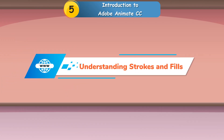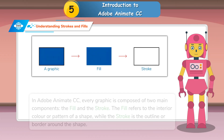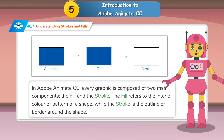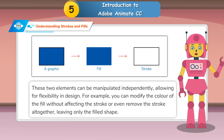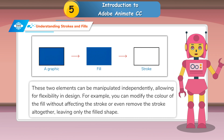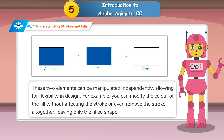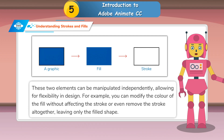Understanding Strokes and Fills. In Adobe Animate CC, every graphic is composed of two main components: the fill and the stroke. The fill refers to the interior color or pattern of a shape, while the stroke is the outline or border around the shape. These two elements can be manipulated independently, allowing for flexibility in design. For example, you can modify the color of the fill without affecting the stroke, or even remove the stroke altogether, leaving only the filled shape.